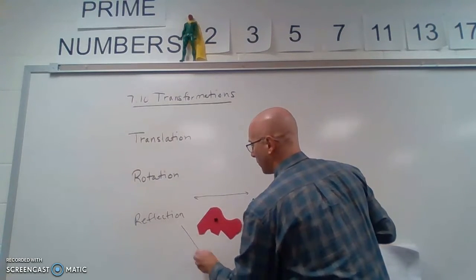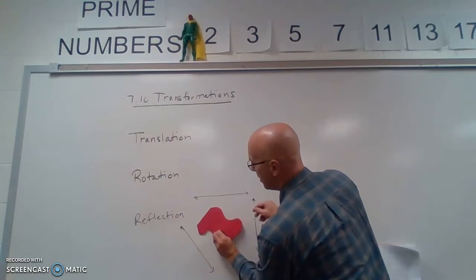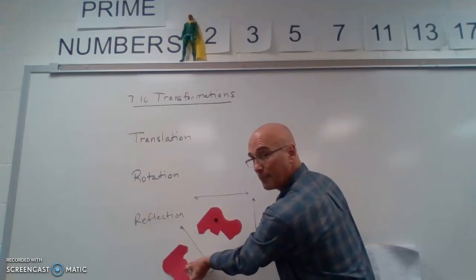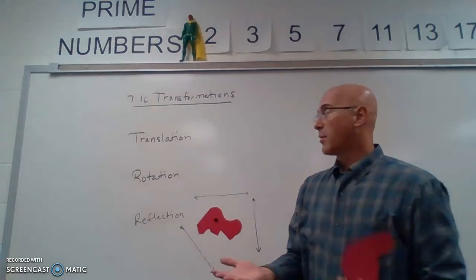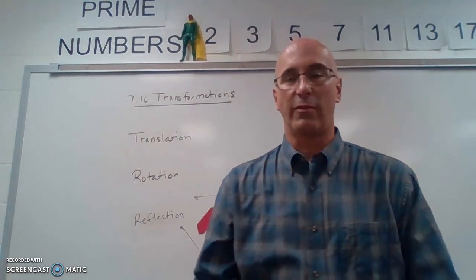You had a line of reflection right here, it's a little bit more complicated to do, but it would flip over and look something like that. So those are three transformations: translations, rotations, and reflections.